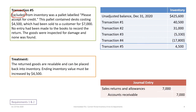Transaction five: not included in inventory was a pallet labeled 'please accept for credit,' containing desks costing $4,500, originally sold to a customer for $7,000. No entry was made to record the return. The goods were inspected and no damage was found, so the product goes back into inventory for resale. Ending inventory must be increased by $4,500, and we will debit sales returns and credit accounts receivable.